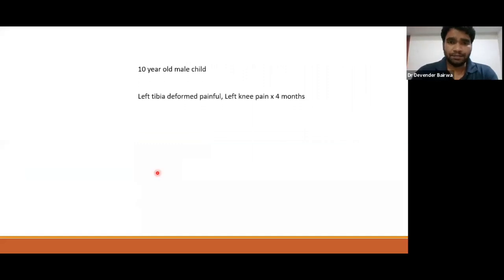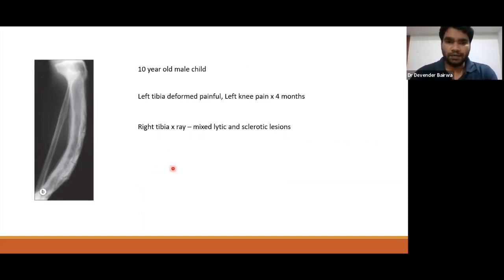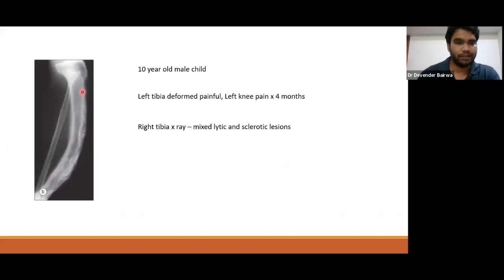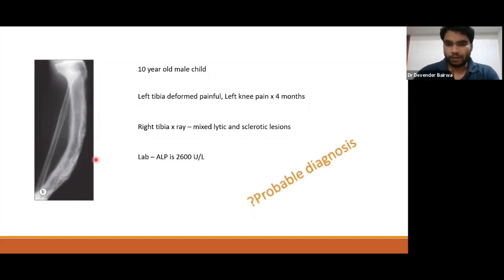The second patient is a 10-year-old male child who presented with deformed left tibia, which is painful, and also left knee pain for the last four months. The left tibia X-ray shows mixed lytic and sclerotic lesions, thickening of the cortex of the bone, and cracks in the outer cortex. One blood report shows ALP value of 2600 — that is very high. We don't know the diagnosis yet.